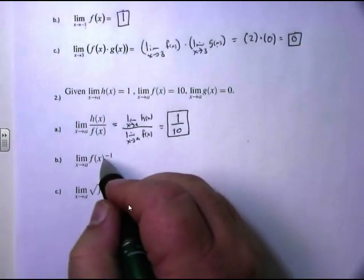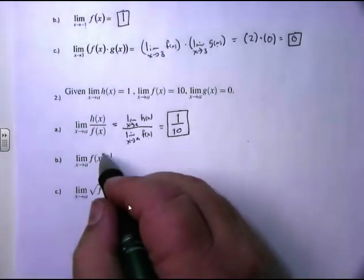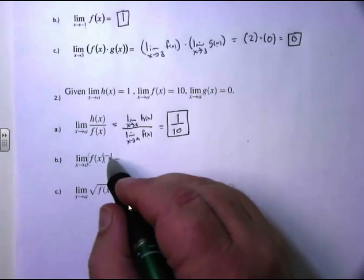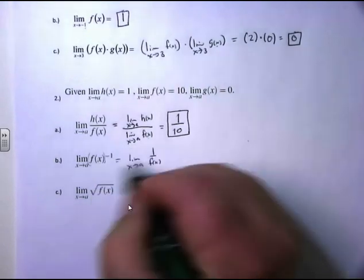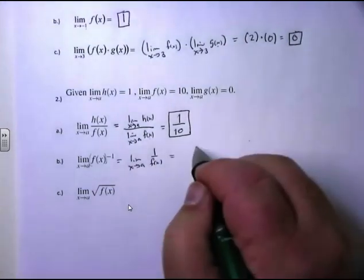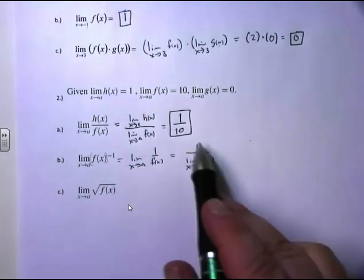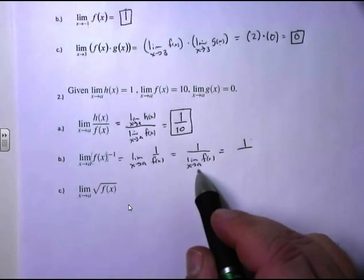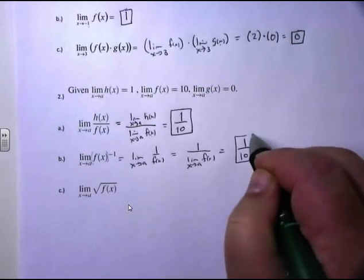Now, this next one has a negative 1 power on the outside: the limit as x approaches a of f of x raised to the negative 1 power. Clean up the algebra first — a negative 1 power means we put it on the bottom, so this is the limit as x approaches a of 1 over f of x. According to our limit laws, that's 1 over the limit as x approaches a of f of x, which was given as 10. So the answer is again 1 tenth.